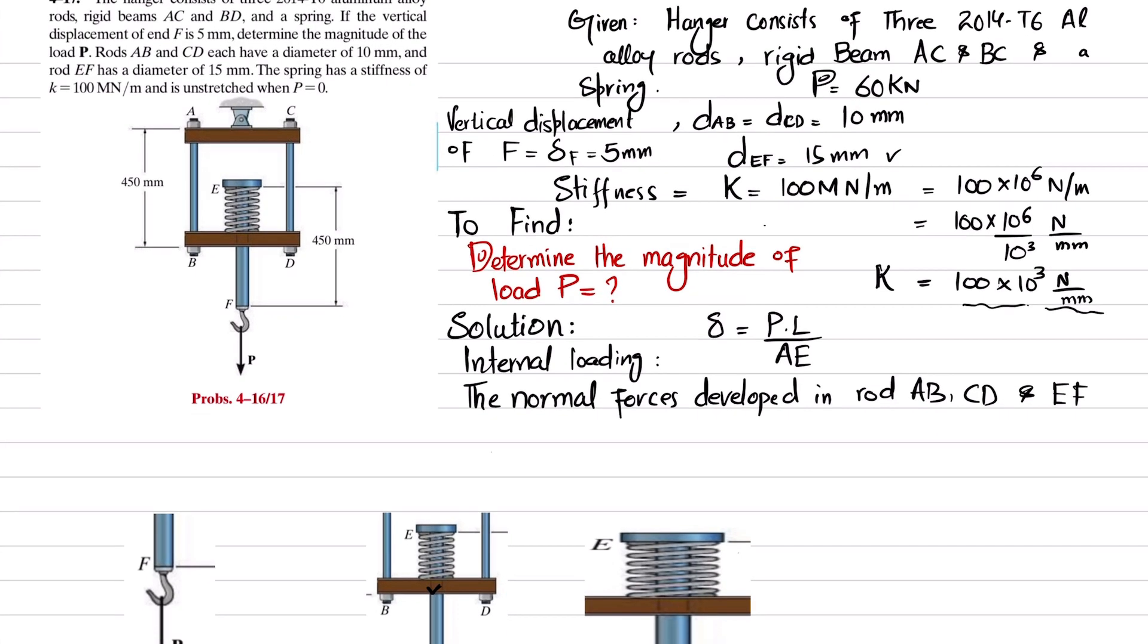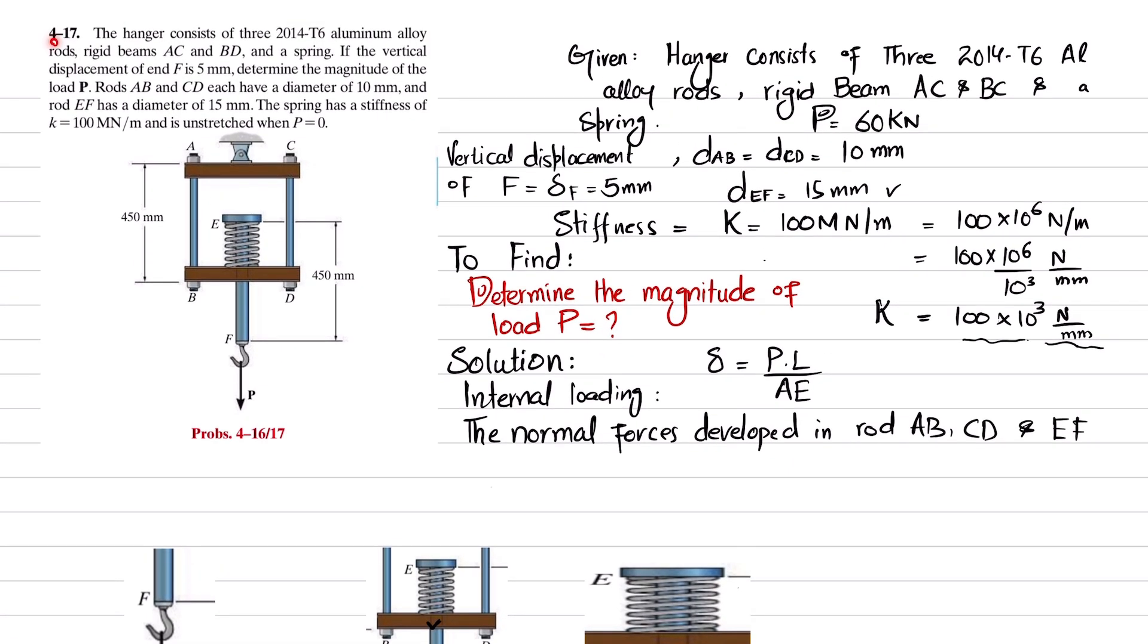Welcome back. Problem 4-17. The hanger consists of three 2014-T6 aluminum alloy rods, rigid beams AC and BD, and a spring. If the vertical displacement of F is 5 millimeters, determine the magnitude of load P.